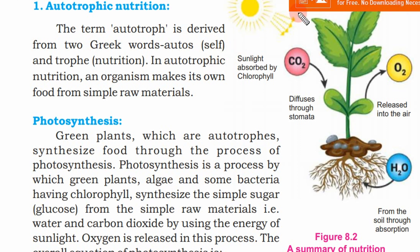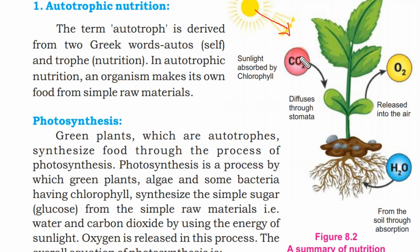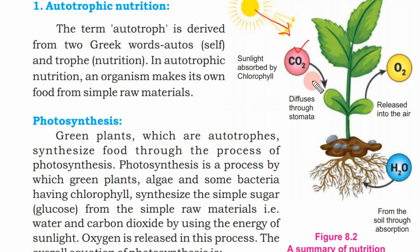Here we see a picture — a summary of nutrition in green plants. Sunlight is absorbed by chlorophyll. Carbon dioxide and water are also taken in. Oxygen is released into the air. This is shown in the diagram.